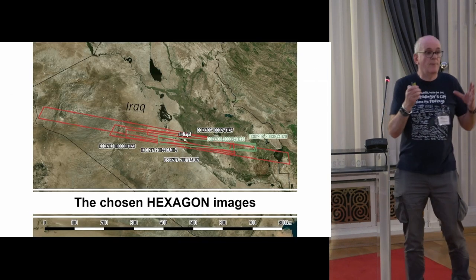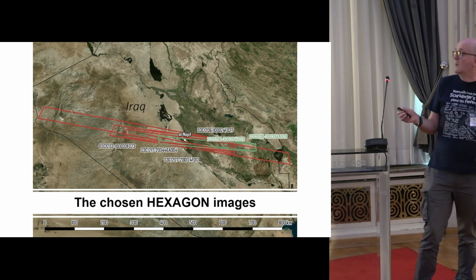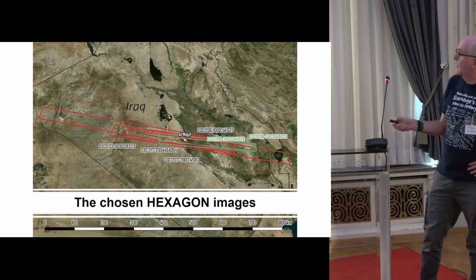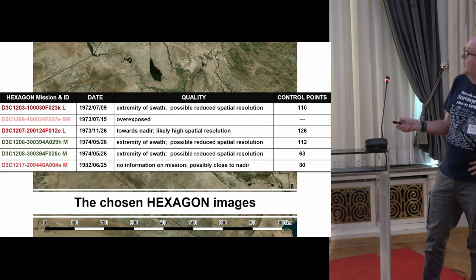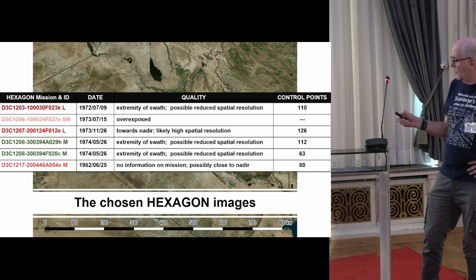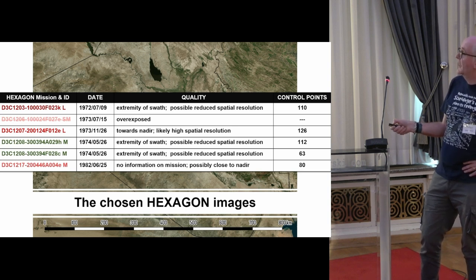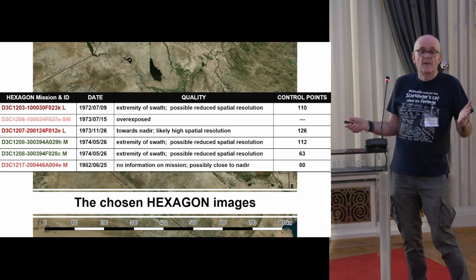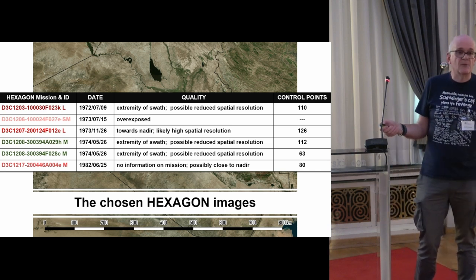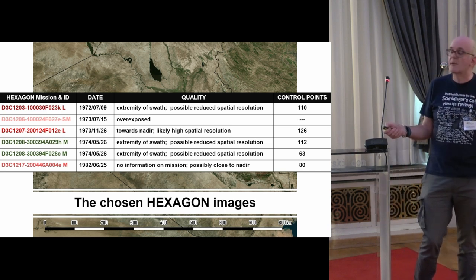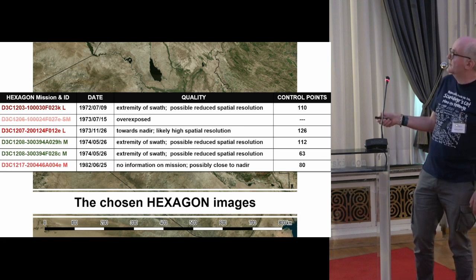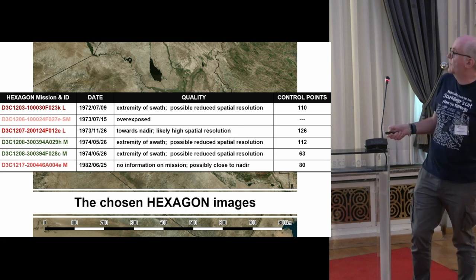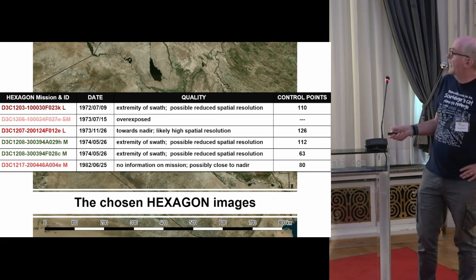From those modeled missions we chose five photographs, kindly funded by ARG. One was a disappointment — the negative was overexposed, which of course can't be predicted from modeling. The others were more or less as expected, with high to possibly slightly reduced spatial resolution and distortion.